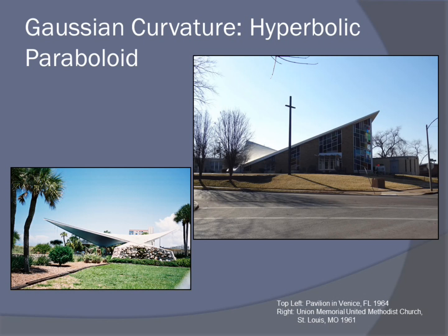What's a hyperbolic paraboloid? That's a really big couple of words. What it means is: if you take your flat plane and deflect it by applying pressure to two corners in the opposite direction from the other two corners, you create this shape. It's kind of like a saddle, and sometimes you can add a bend to the middle. Here are some examples of the hyperbolic paraboloid, the local example being the Union Memorial United Methodist Church here in St. Louis.